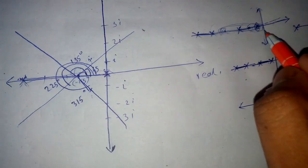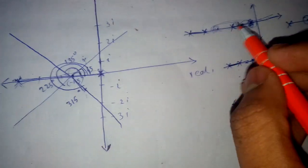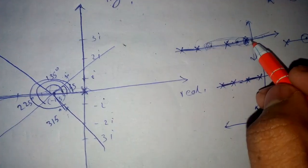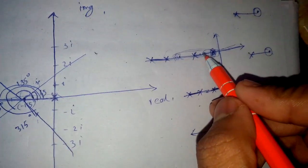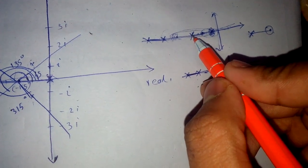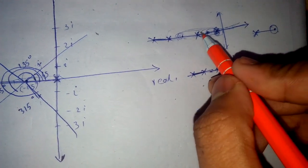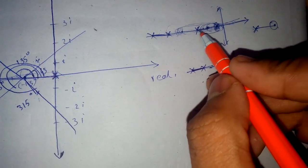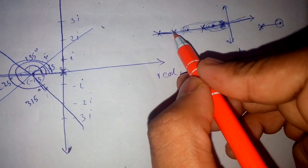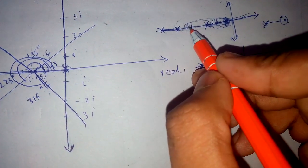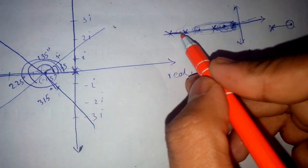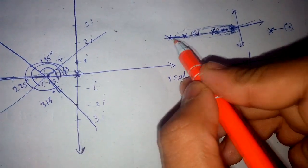Continuing the real-axis rule: if a point has three poles and zeros to its right, that is an odd number, so root locus lies there. Consider a case with alternating poles and zeros. From a zero, no root locus starts — root locus always starts from poles. At each point, count poles and zeros to the right: if the count is odd, root locus exists there; if even, it does not. An odd count of five poles and zeros means root locus lies there.